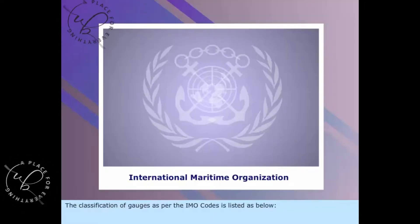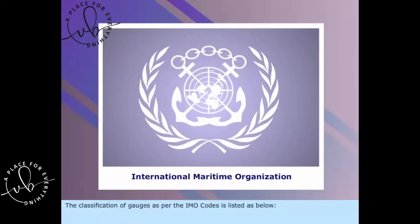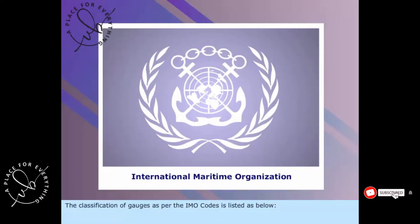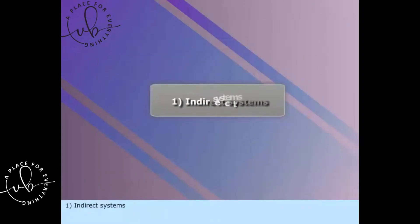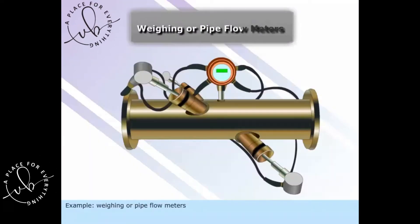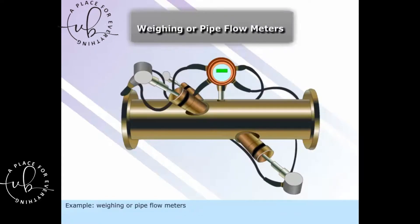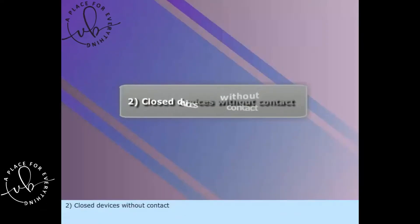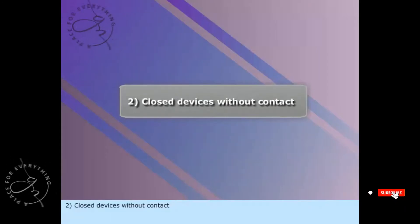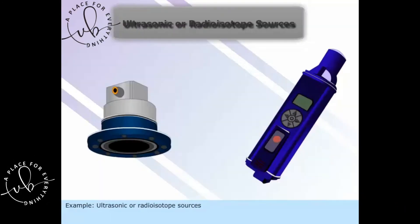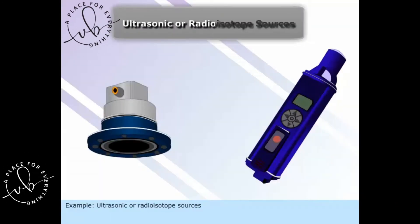The classification of gauges as per the IMO codes is listed as below: 1. Indirect systems - Weighing or pipe flow meters. 2. Closed devices without contact - Ultrasonic or radioisotope sources.